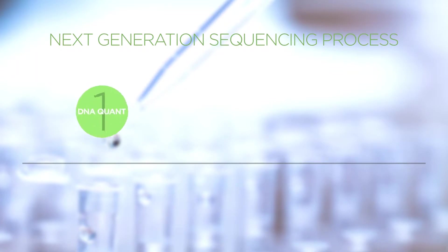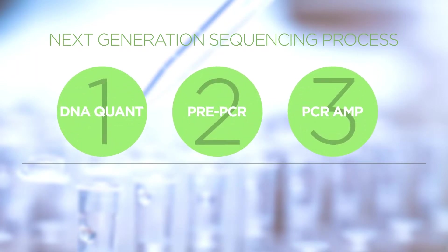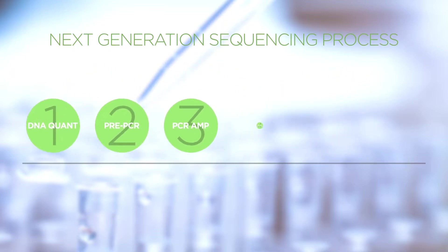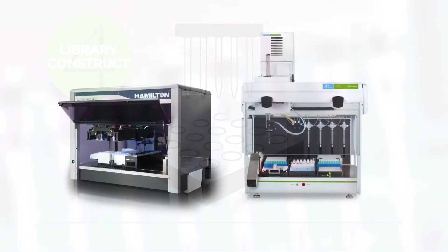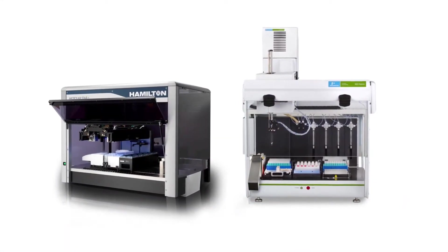The steps for next generation sequencing begin the same as capillary electrophoresis. However, with NGS, a DNA library is prepared post-PCR amplification, followed by sequencing and interpretation. The incorporation of automation technologies can also greatly simplify this library construction and enhance the quality of the data.